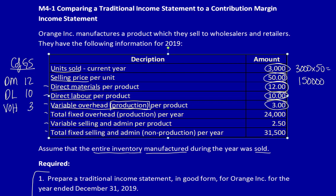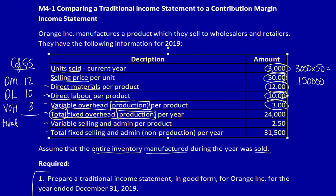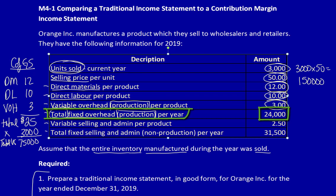Variable selling and administrative costs per product — that is a period cost and it's not included in product costs or cost of goods sold. Total fixed overhead production is a total, so we can't use it in our per unit costing. Total per unit production costs: $25 each. Multiply by the number of units sold — total variable costs: $75,000. Now we add the total fixed overhead for production: $24,000. Cost of goods sold: $99,000.